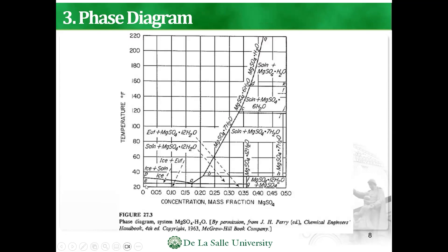Here is an example of a phase diagram. The y-axis is in degrees Fahrenheit and the x-axis is the concentration, expressed as mass fraction of magnesium sulfate. For example, at 140°F, the concentration would be roughly 0.35, corresponding to magnesium sulfate hexahydrate. At 40°F it would be the heptahydrate, and at around 30°F it would be a different line. You have to be careful about which line you are reading from.